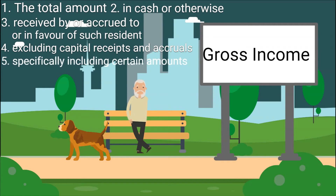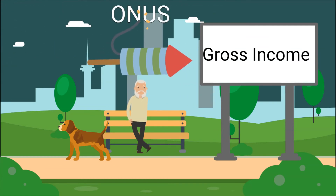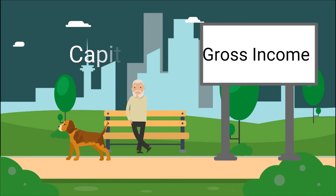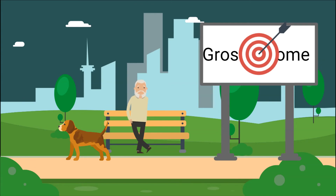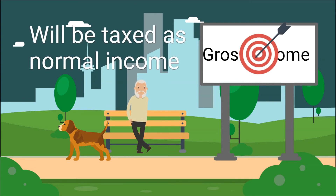Lastly, it must specifically include certain amounts. This is an important part of the definition. Often, people stop at step four and do not make sure that the amount in question is income in nature and not capital in nature. This provision can make a capital amount part of gross income and not subject to capital gains tax. It is important to know the above because the onus is on a taxpayer to prove that an amount can be excluded from gross income. If the taxpayer cannot provide evidence to show that an asset was acquired as a capital asset, the proceeds resulting from the sale of that asset will be included in the taxpayer's gross income, to be taxed as normal income tax instead of the application of capital gains tax.